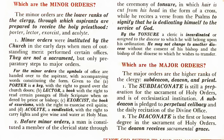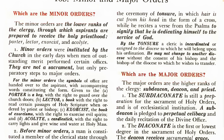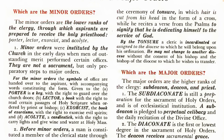Before minor orders, a man is constituted a member of the clerical state through the ceremony of tonsure, in which hair is cut from his head in the form of a cross while he recites a verse from the psalms, to signify that he is dedicating himself to the service of God. By the tonsure, a cleric is incardinated, or assigned to the diocese to which he will belong upon his ordination. He may not change to another diocese without the consent of his bishop and the bishop of the diocese to which he wishes to transfer.